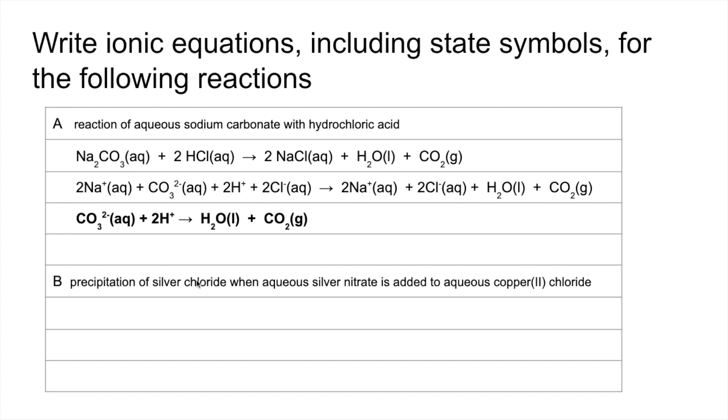Moving on to the second one, precipitation of silver chloride. That means silver chloride is going to form as a solid when these two aqueous solutions are added together. The full equation looks like that. Don't forget that's solid there, but aqueous for the rest.